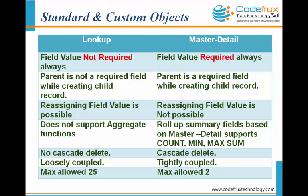Similarly, in a lookup relationship the parent is not required, but in a master detail relationship the parent must always be included in the child record. In a master detail relationship, you cannot reassign the relationship field value once set, but in a lookup relationship you can do a reassignment. Lookup also does not support aggregate functions like sum, count, minimum, or maximum — those calculations require rollup summary fields defined in the parent object to aggregate records from the detail object.